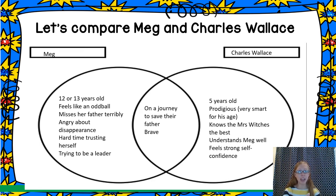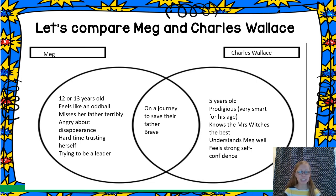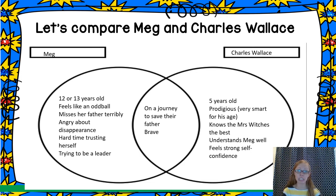Though they have many differences, they also have a lot of similarities. They are both siblings, and they're both on this journey to save their father. In different ways, they're both being really brave. There are times when Charles Wallace says he's just trying to be brave, even though he may not know exactly what's going on — he uses that self-confidence that he has. Meg is trying to be brave as she seeks to be a leader and seeks to understand why she's the one who needs to be on this journey and what she can offer that the others may not be able to.